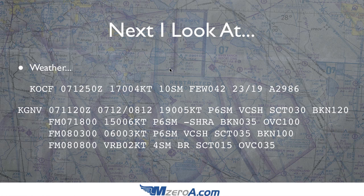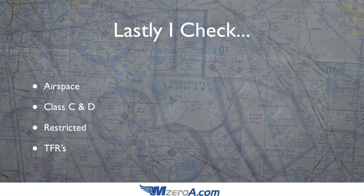The last thing I check, after I've checked which direction I'm heading and after I've checked the weather, is airspace. Am I going to be approaching any Class C, D, or B airspace that I need to get up and over? Or am I going to have to be on flight following to get cleared through? For any restricted airspace, I would go down to the bottom of my VFR sectional chart, see who controls that airspace, see when it's active, what altitudes it's active up to, and base my decision on that.